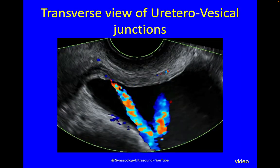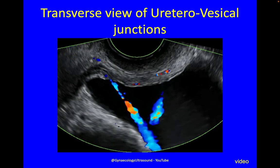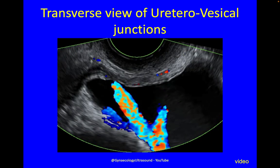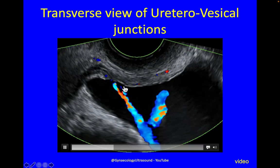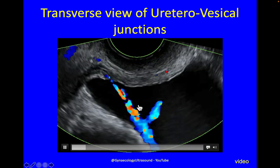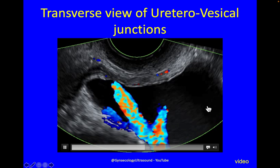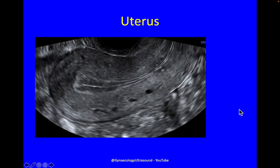If you go in the transverse plane, here you can see the ureterovesical junctions, one here and one there, and you can see that this patient was very well hydrated. Having looked at the bladder, we look at the uterus next. The things we need to think about are the position, shape, and if there's any pathology.